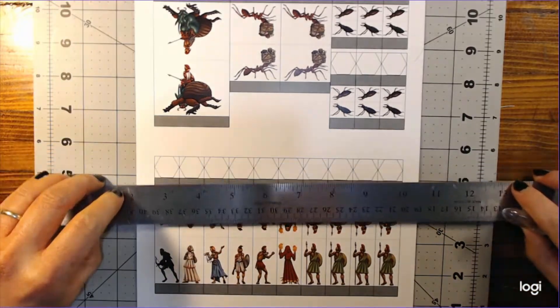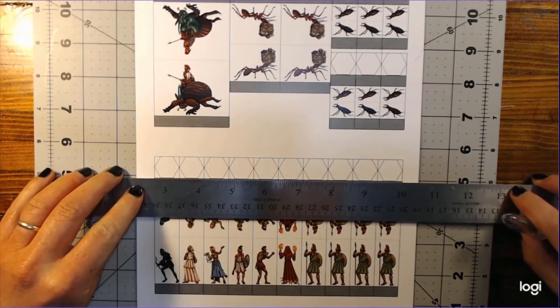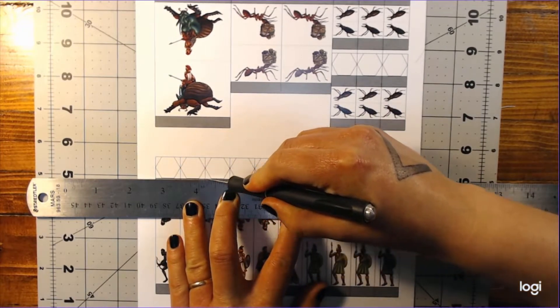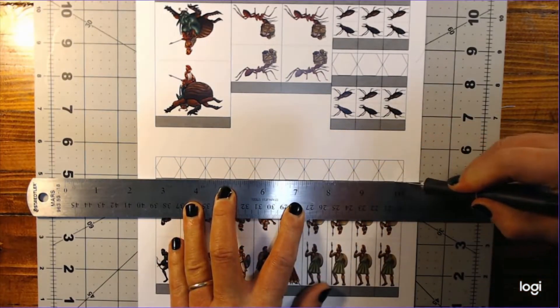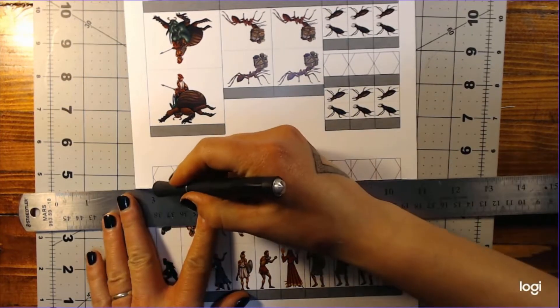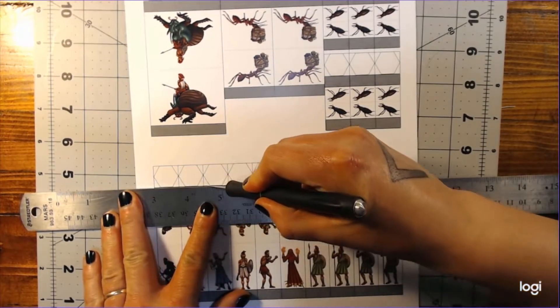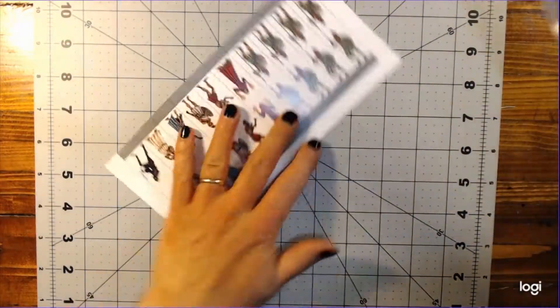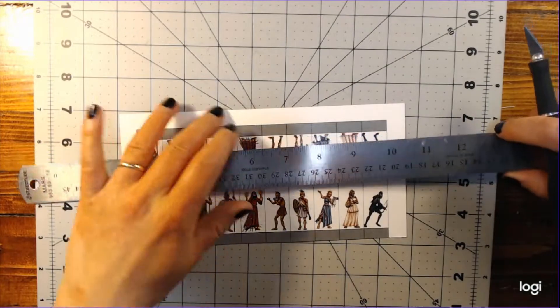Line the ruler up along one of the edges of the boxes around the minis and use it to carefully guide the blade of your knife as you cut. It may take a couple of passes to get all the way through the cardstock. Repeat this on all four sides until you have a block of miniatures free from the page.